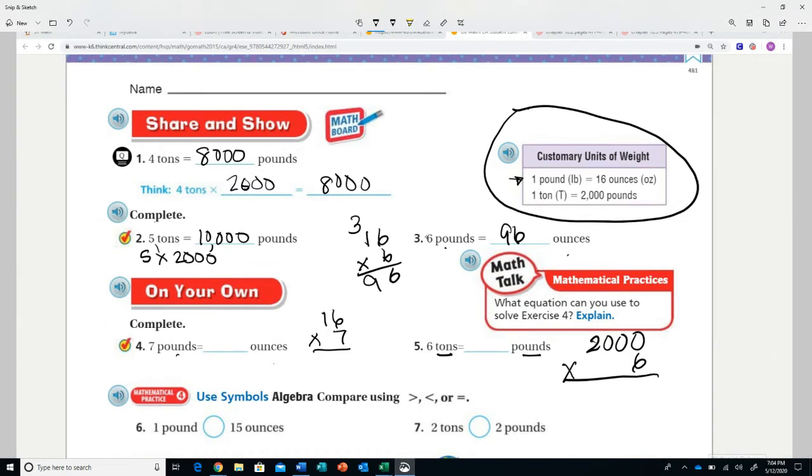We have some comparison here, so greater than, less than, or equal to. One pound versus 15 ounces - this one's kind of like a freebie question because it's pretty simple. You go up to your chart, you find out one pound is 16 ounces, and you're going to say I know that this is 16 ounces versus 15 ounces, and 16 wins.